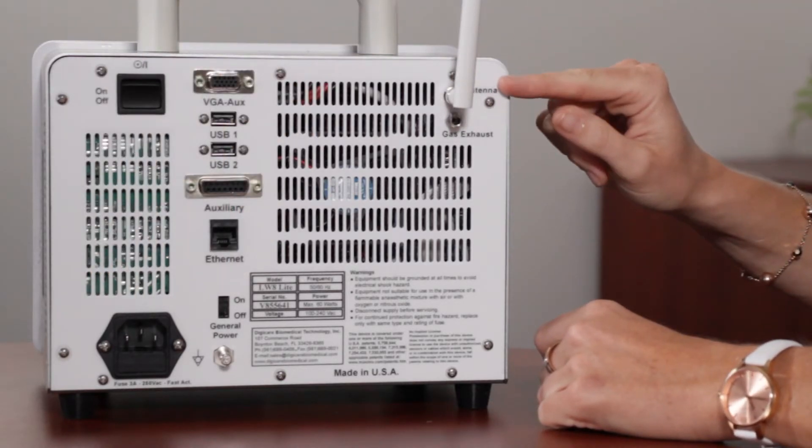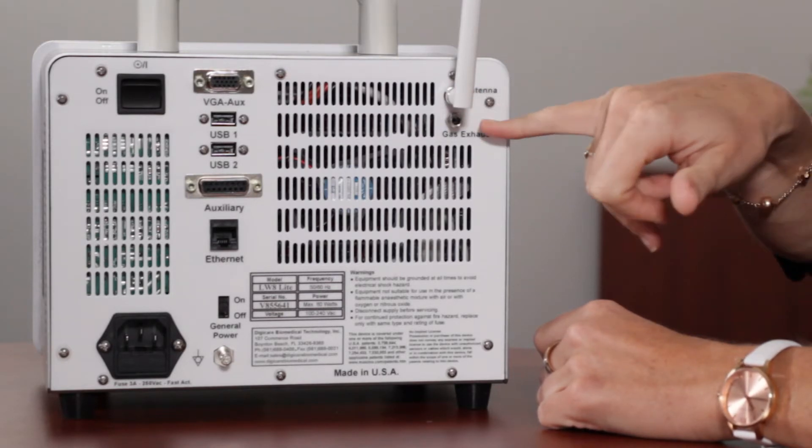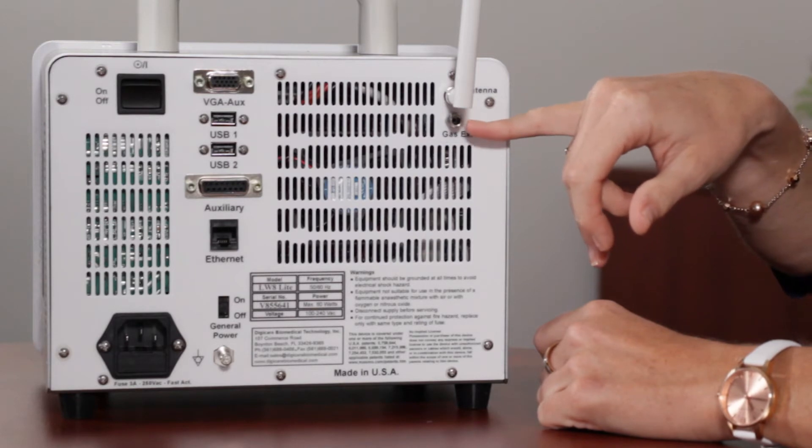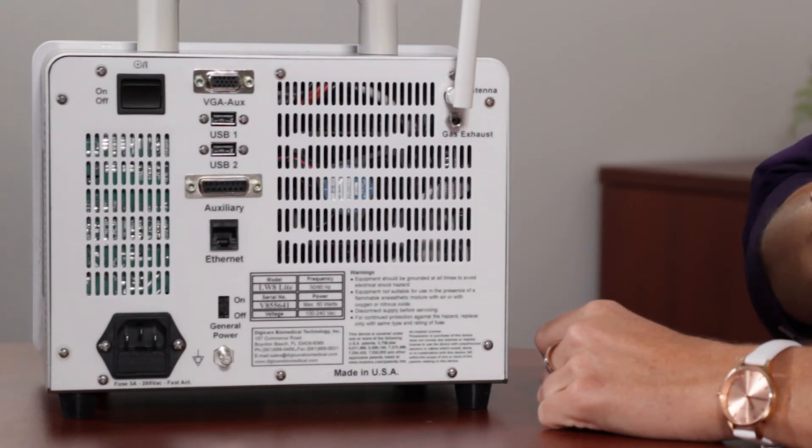Over here is where an antenna would go if your monitor does have wireless installed. This is your gas exhaust. Your gas exhaust is for if you have internal side stream CO2 and you need to exhaust the gas. The monitor does come with a sample line that you connect to here, and then you connect that to your scavenging system.